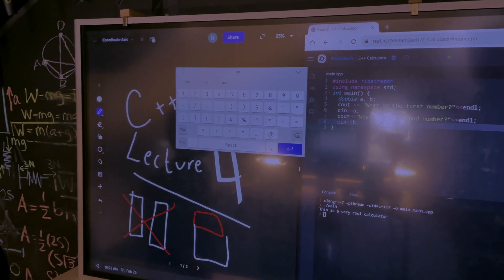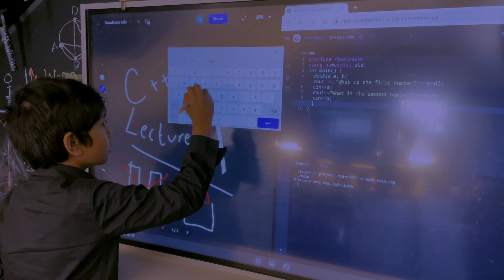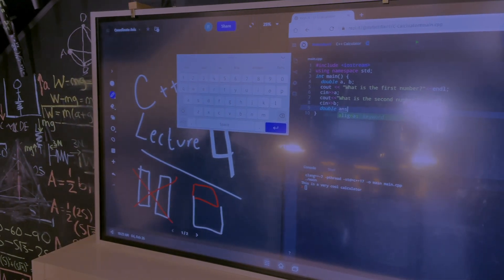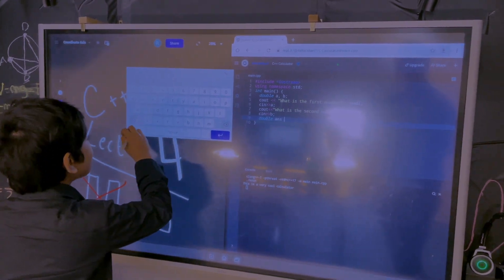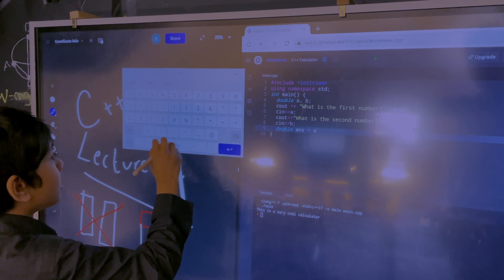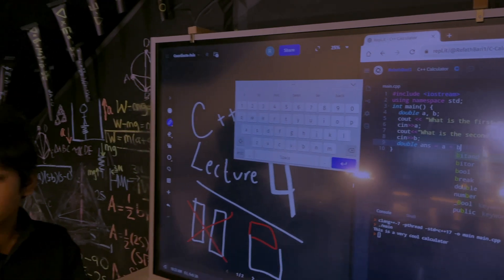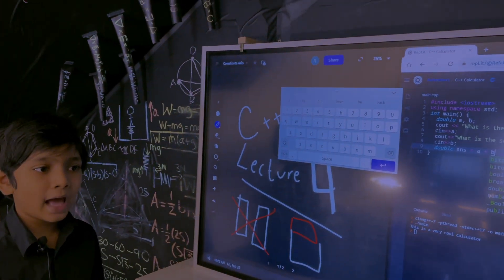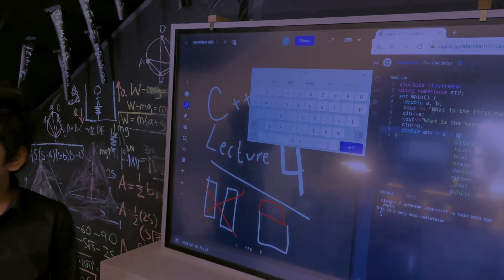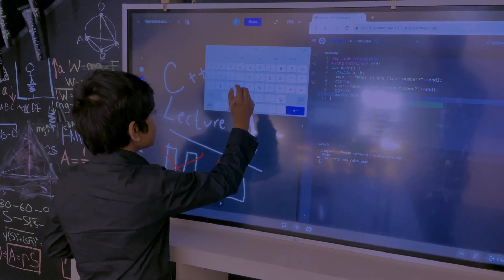Then we can make a new variable double ans for answer. I think we can all agree what that means. And that's going to be equal to A plus B. Now, obviously, you can make a more complex calculator, ones that ask the user what operation they want and then begin, and ones that can use exponents as well. But we are going to talk about that way later when we learn about if statements. But for now, this is our calculator.